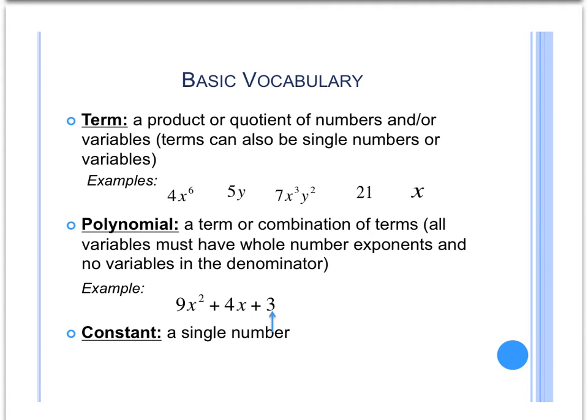Some necessary basic vocabulary when working with polynomials includes term, which means a product or quotient of numbers and or variables. Terms can also be single numbers or variables. In each of these examples, a term is one complete product, or it can also be a quotient. It can be any sort of fraction or quotient, raised to powers, whatever, as long as it's one compact term.